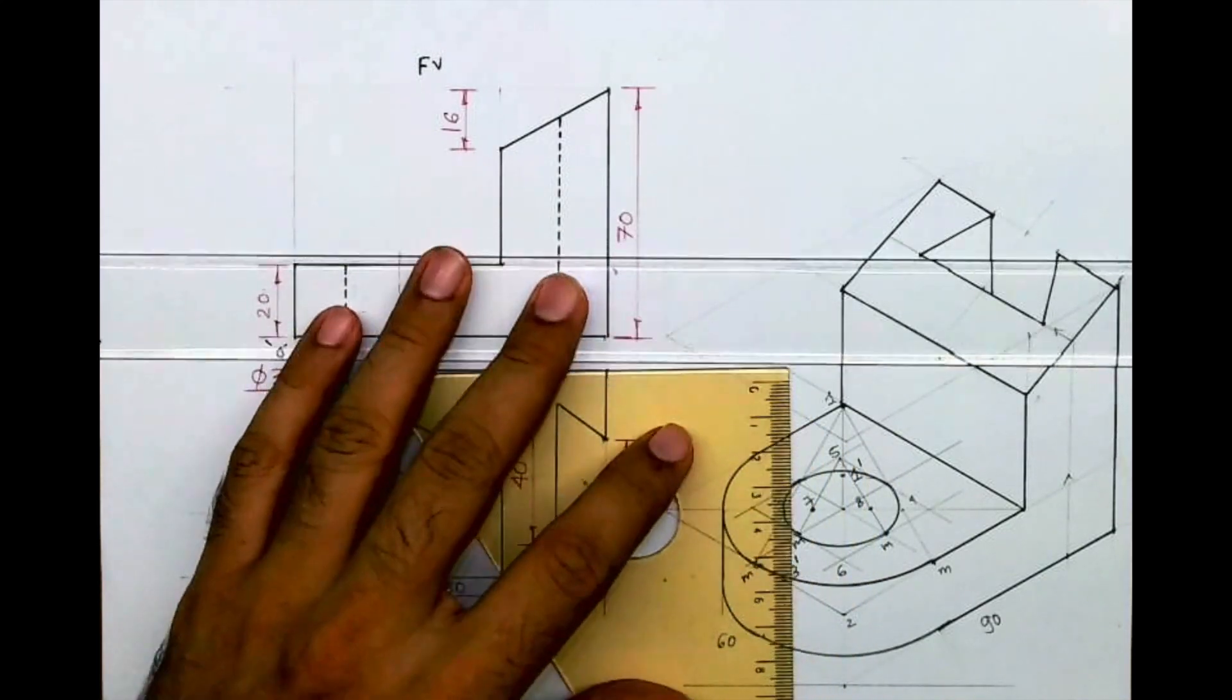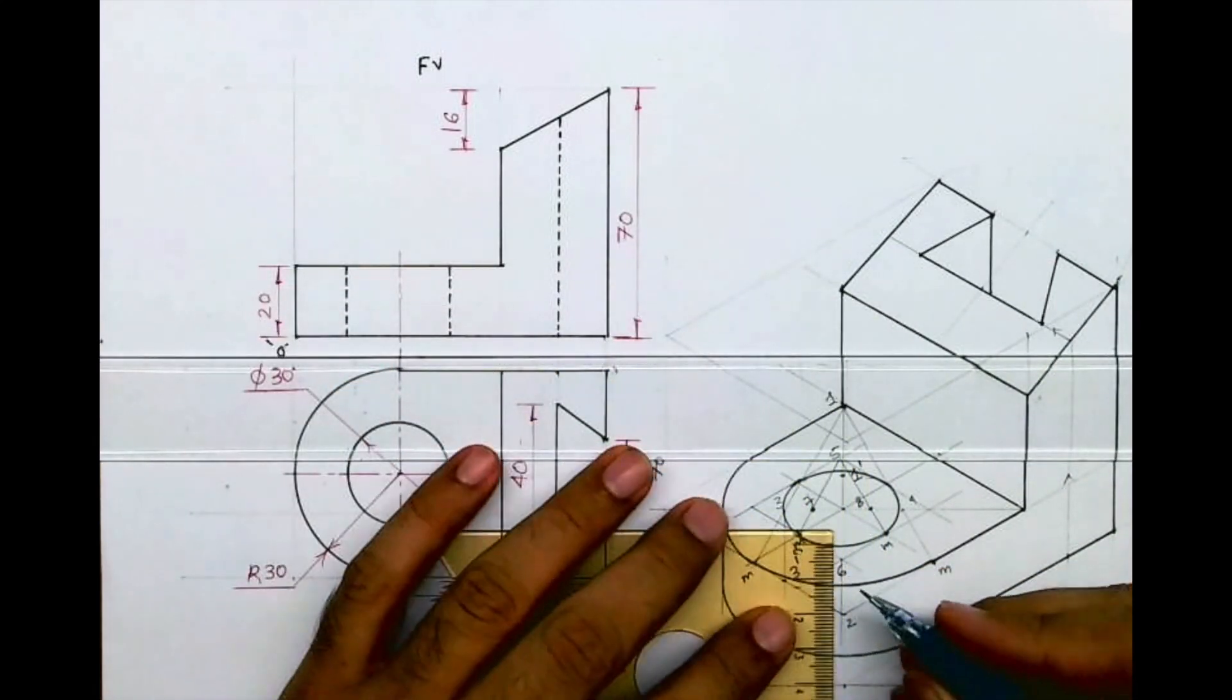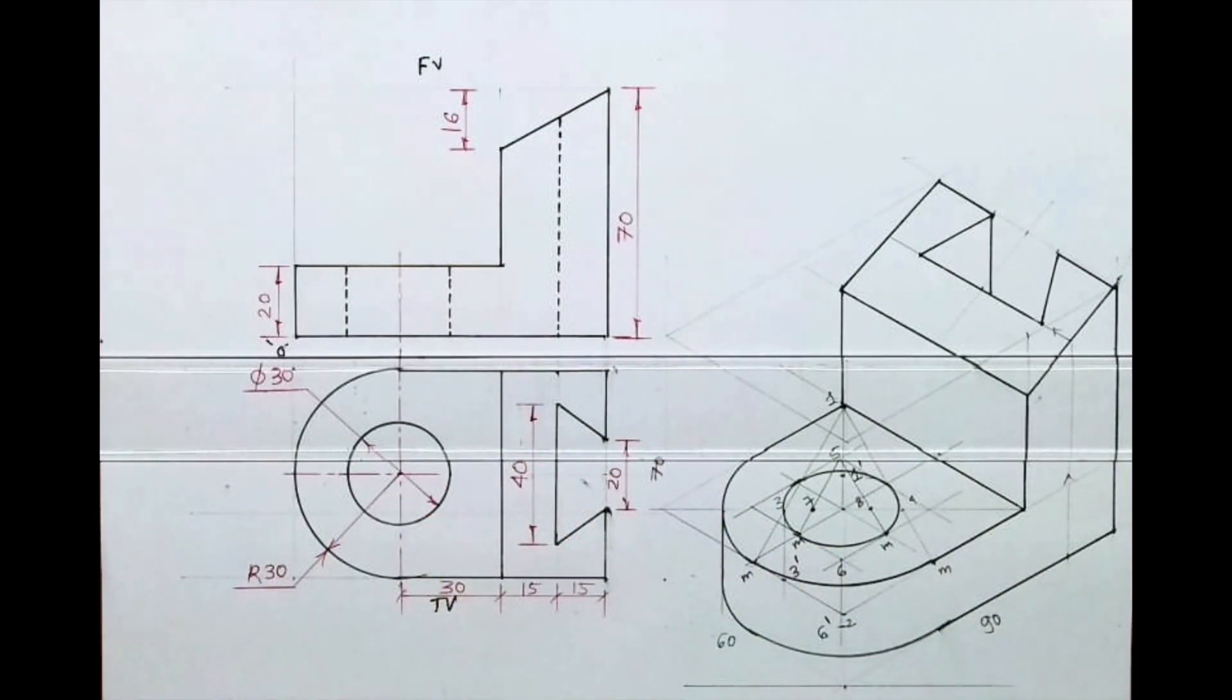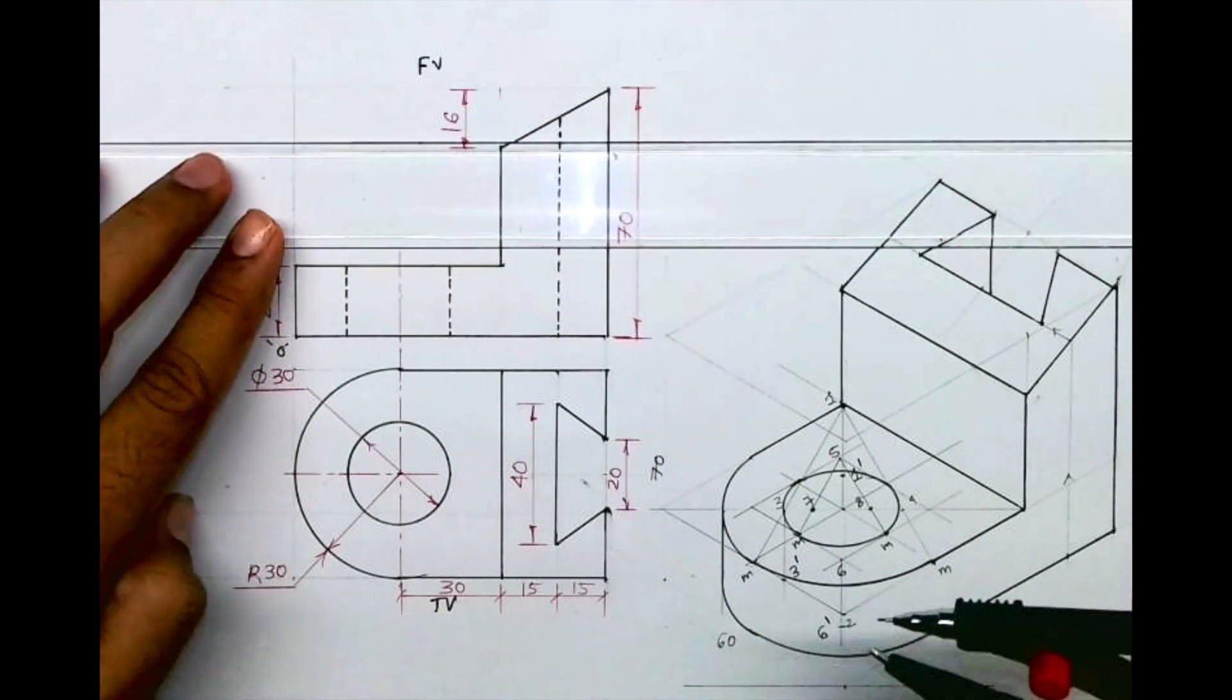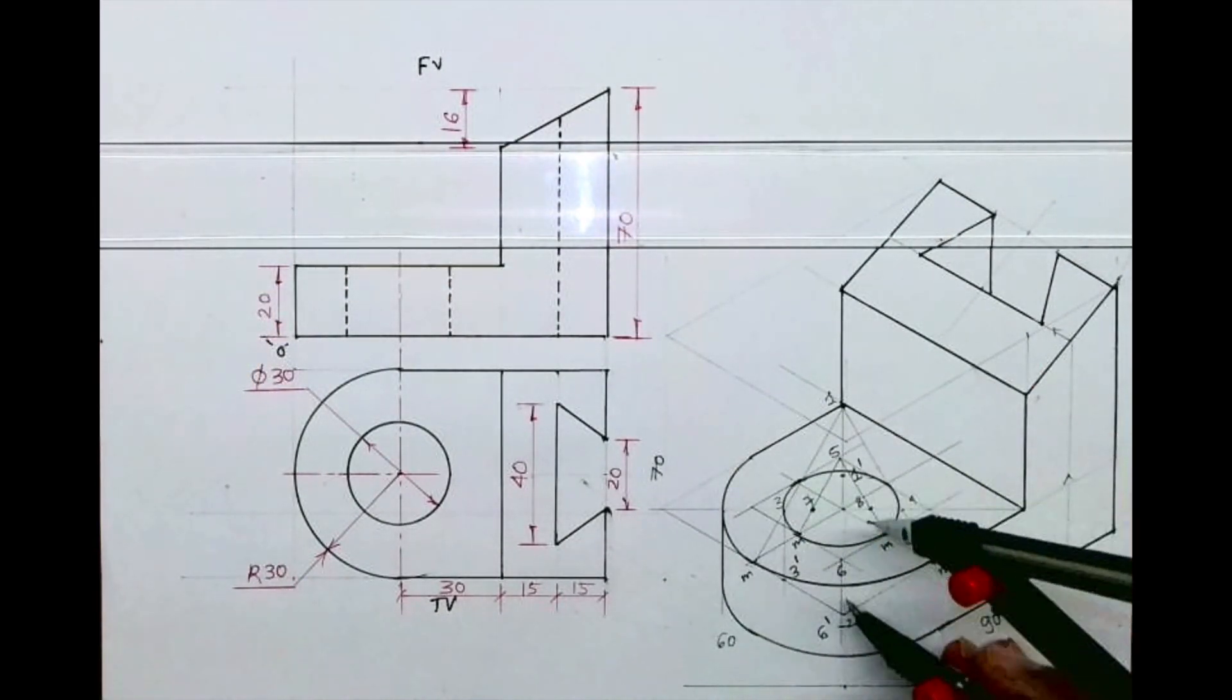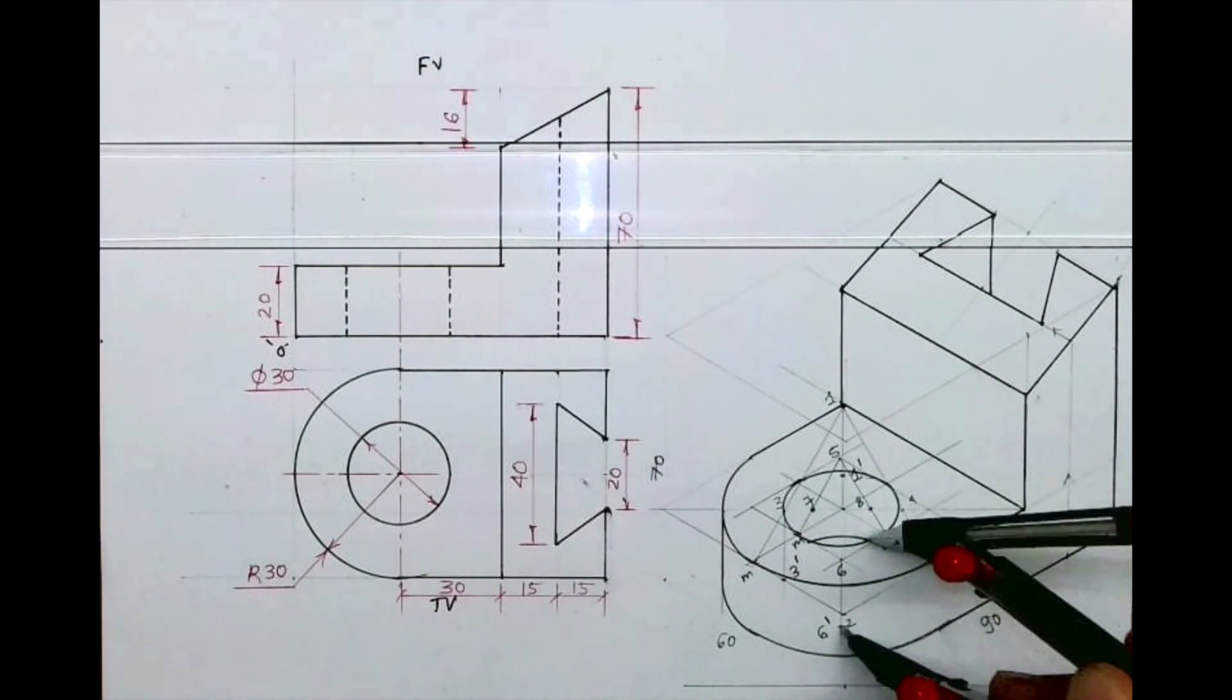Point 6 you go down by 20, so from point 6 you go down by 20.